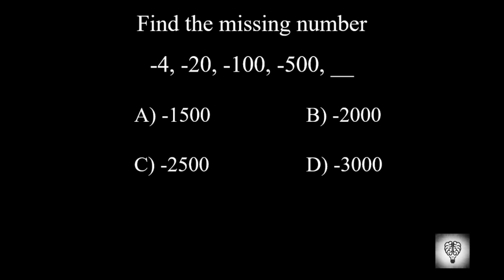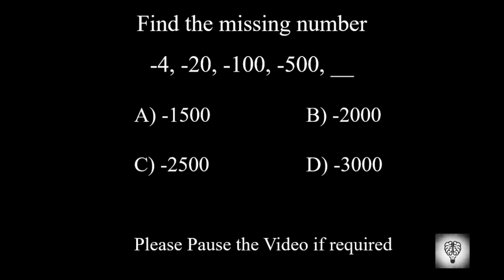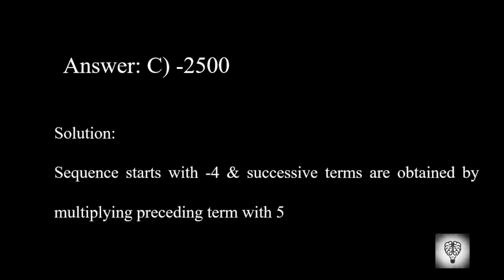Find the missing number. Please pause the video if required. The correct answer is minus 2500. The sequence starts with minus 4, and the successive terms are obtained by multiplying the preceding term by 5.